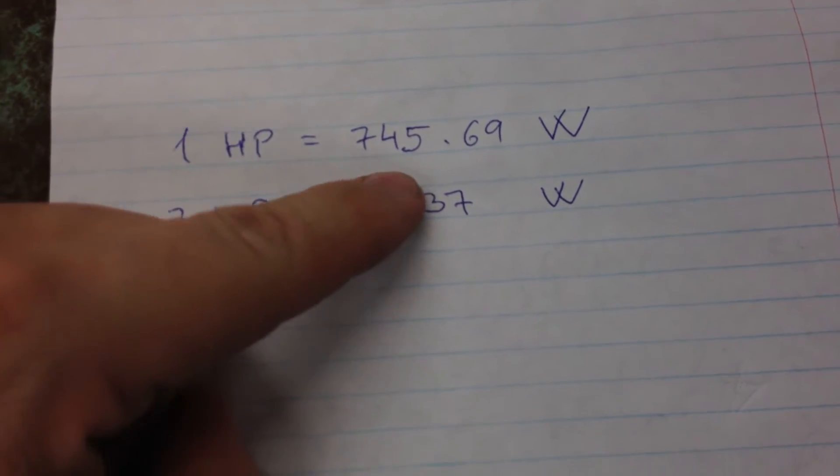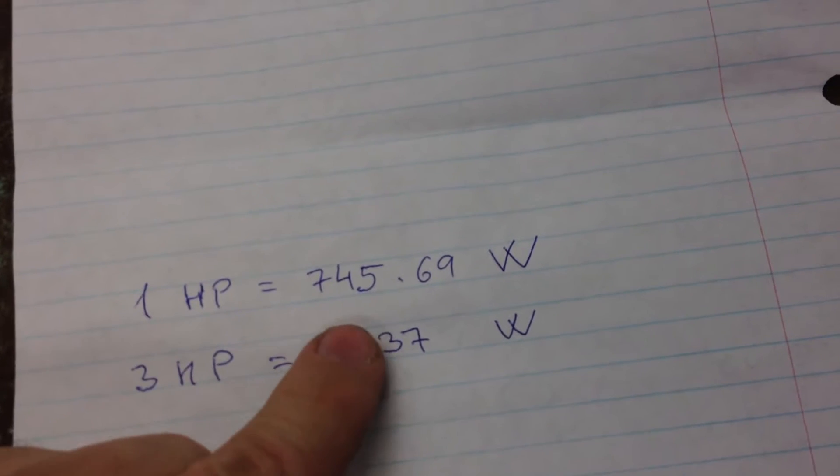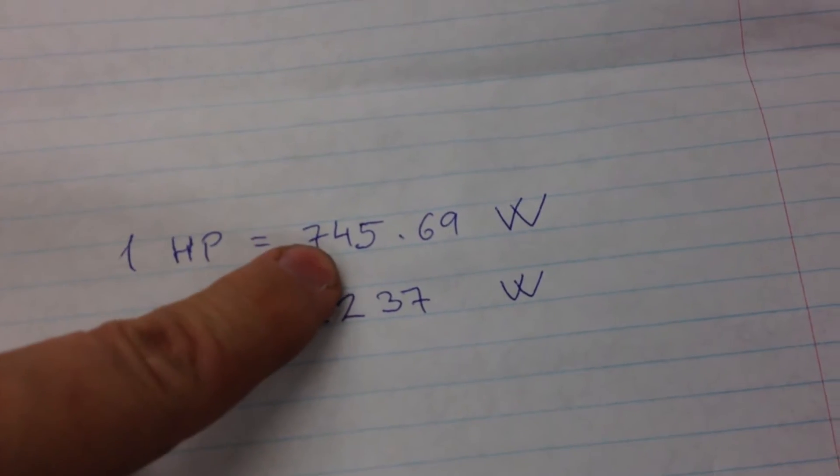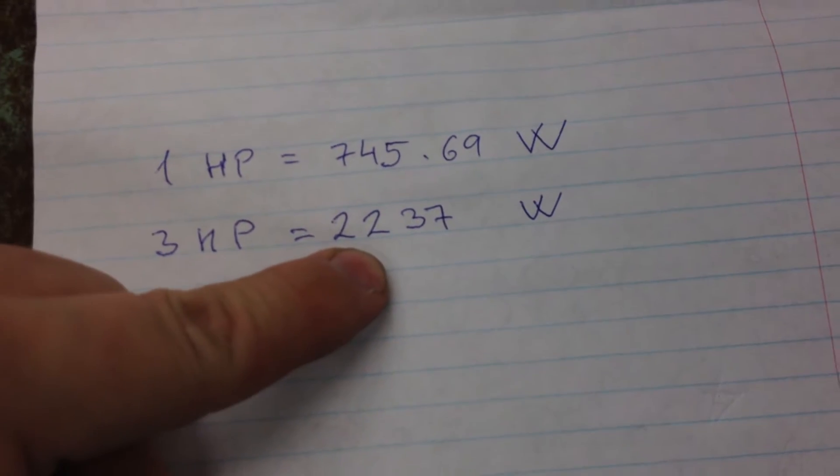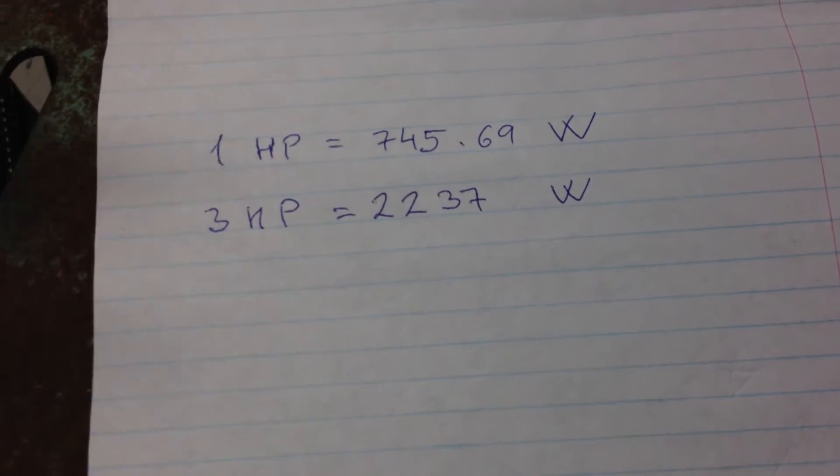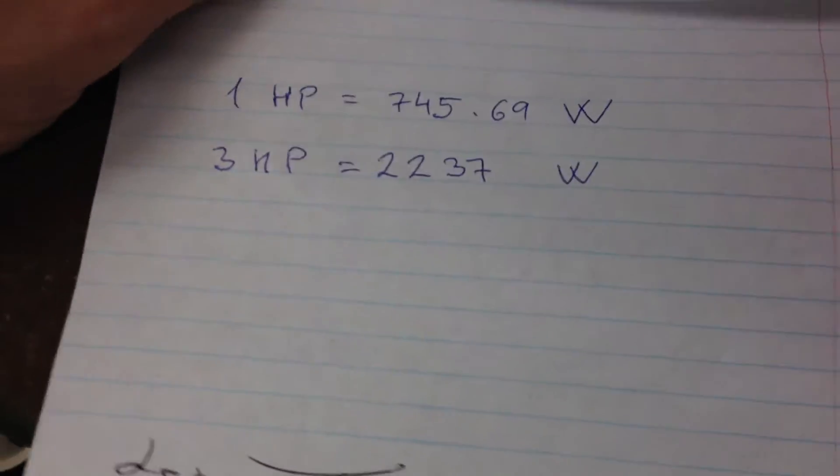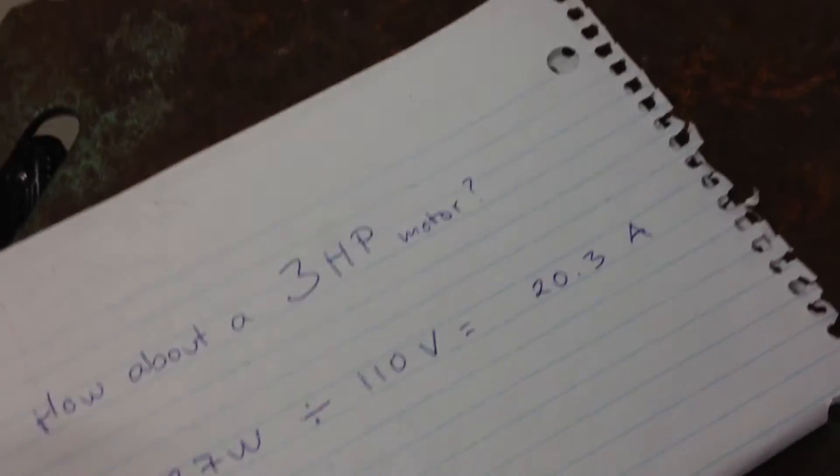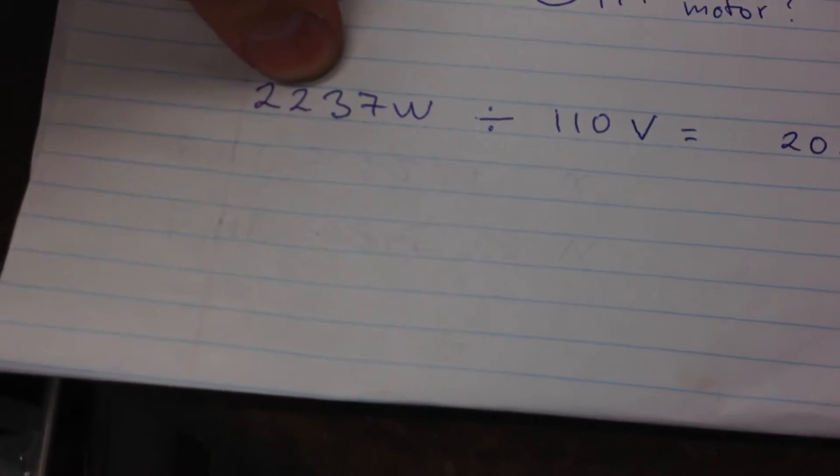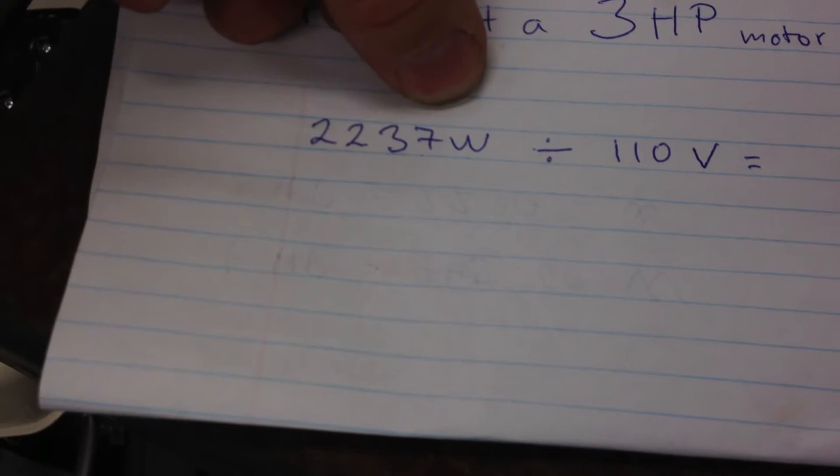How volts, amps, and watts work together is printed on this side here. The 2237 watts, which is the three horsepower amount, divided by the incoming 110 volt potential that's coming in...